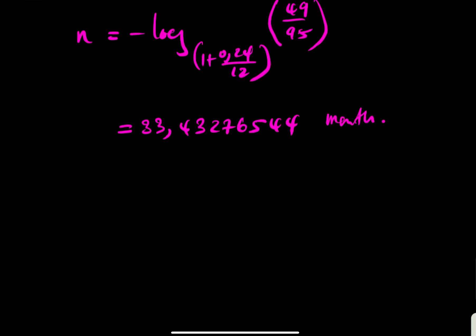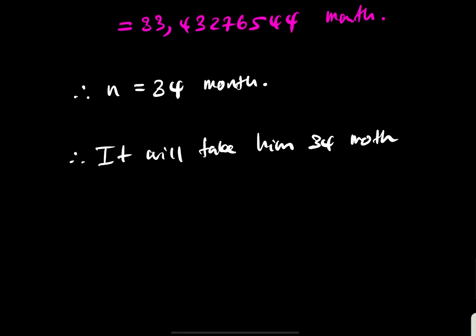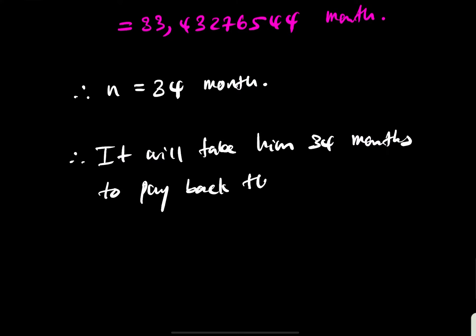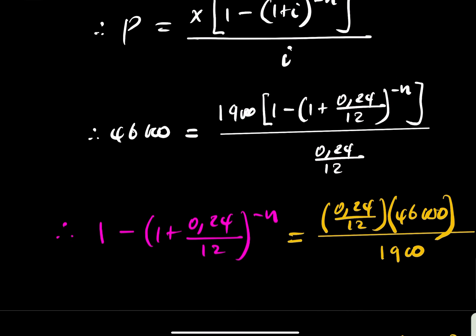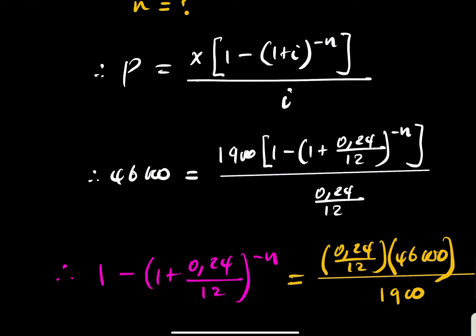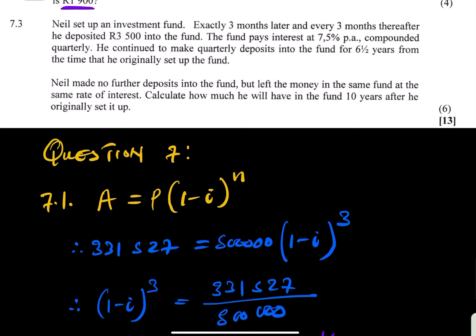Since the result is 33.43 months, you round up and add one, giving 34 months. Therefore it will take 34 months to pay back the loan for that motorcycle. The main goal is to identify the correct formula and work through the algebra carefully — algebra must be prioritized here.